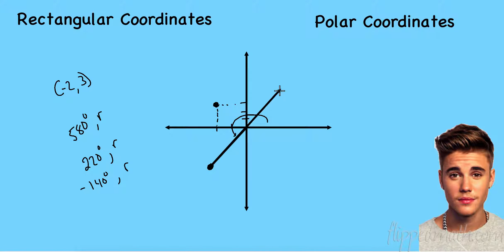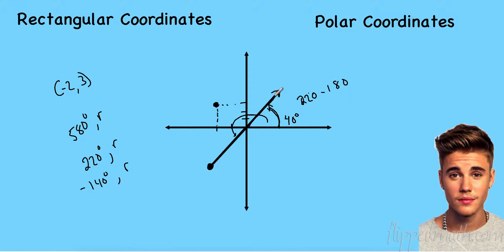Here's one that's kind of strange but totally works with polar coordinates. This angle right here is 180 degrees less than 220, so it's 40 degrees. But the radius goes the complete opposite direction. So if I wanted to describe that point, I'd go 40 degrees and then use the negative radius — negative R. Pretty cool stuff.